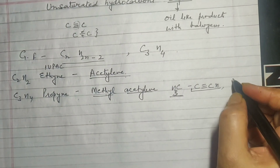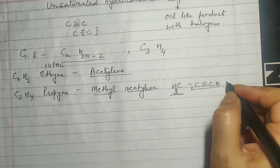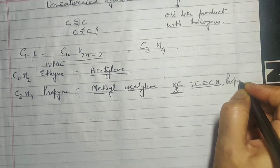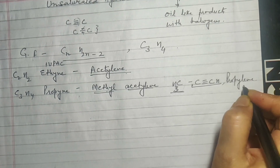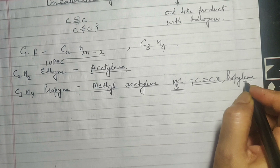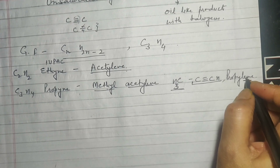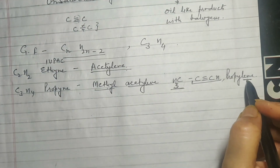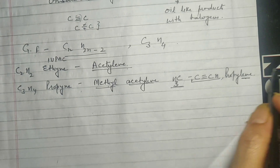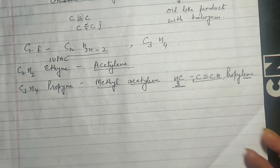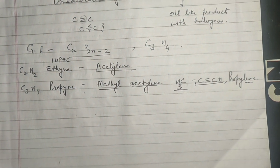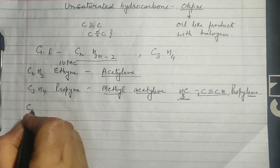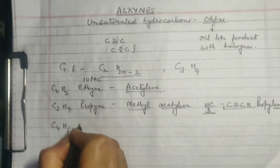Earlier it was also called Propylene — but don't be misled by this name because it is just a common name and the rules of IUPAC do not apply to common names. There is no logical reason behind calling it Propylene. The next member in the series is C4H6, which is called Butyne.